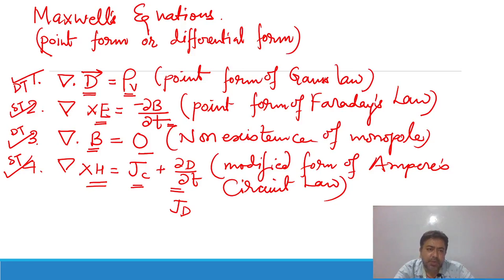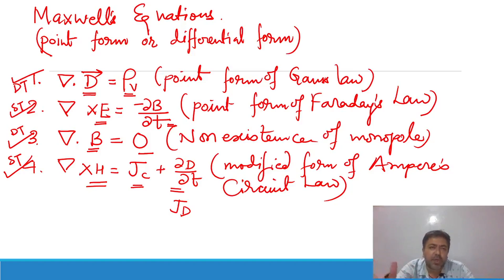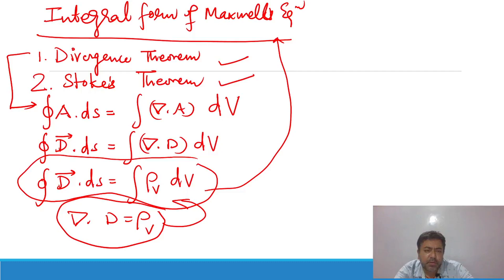These are Maxwell's equations. In GATE examinations, questions are asked where you need to identify which of the four equations is correct or incorrect among given options. So if you know Maxwell's equations well, you can identify both correct and incorrect forms. Point form: first is Gauss's law, second is Faraday's law, third is non-existence of monopole, fourth is Ampere's law. Using the divergence theorem and Stokes' theorem, we convert the point form into integral form.